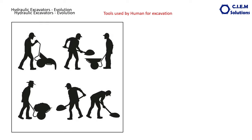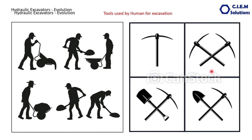People slowly started implementing small metallic tools. What we have shown here — these are the tools. This is the sharp tool for digging the surface, this is the one called the shovel for picking the material, and this is called the hauler. Whatever material is picked is loaded into this, and then it is transported to the required place. So from hands, they moved to metallic tools.